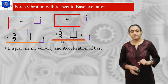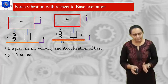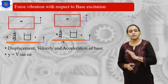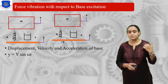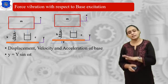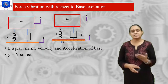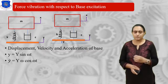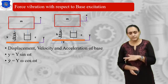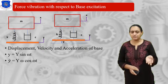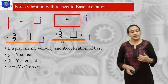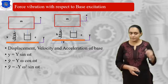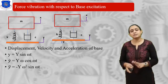Now let us find the base displacement, velocity, and acceleration. The displacement is y = Y sin(ωt) — just like simple harmonic motion where the standard displacement is X sin(ωt). In our case, we consider y = Y sin(ωt) as the displacement of the base. The velocity of the base is ẏ = Yω cos(ωt), obtained by differentiating with respect to t. Differentiating again, we get the acceleration: ÿ = -Yω² sin(ωt).